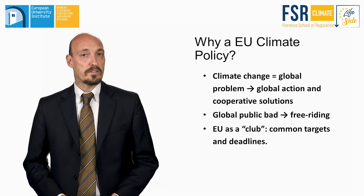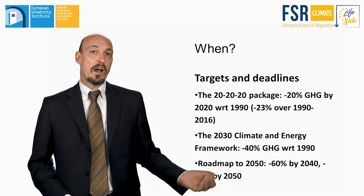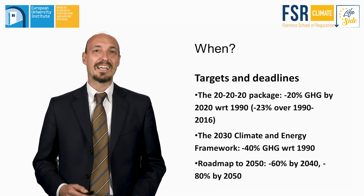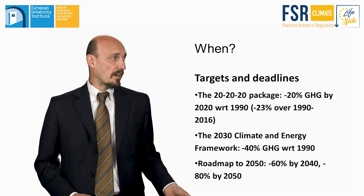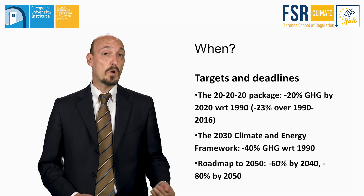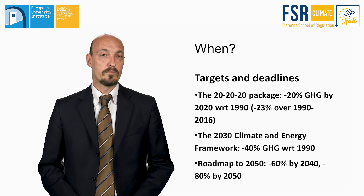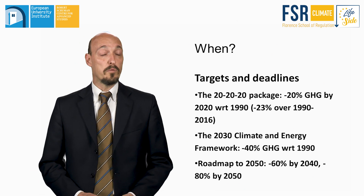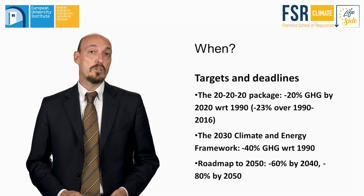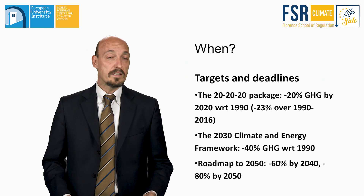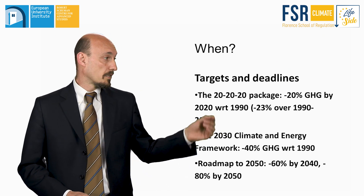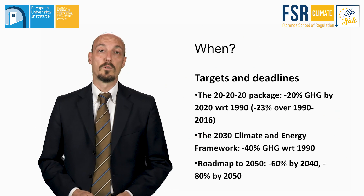And this brings us to the second question: when? When are these targets to be achieved? The EU set a long-run strategy of decarbonization of the economy. It started with the 20-20-20 package that aimed at reducing GHG emissions by 20% by the year 2020. We actually achieved the target well before — in 2016, emissions were already reduced by 23%. This induced the EU to raise its ambition to progressively higher targets: 40% in 2030, 60% in 2040, and 80% to 95% by 2050.